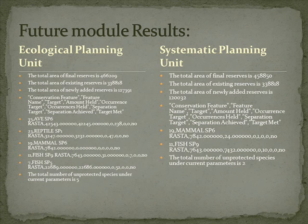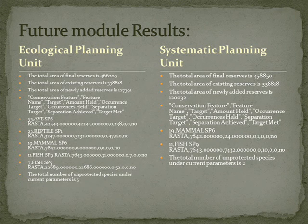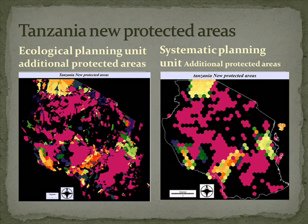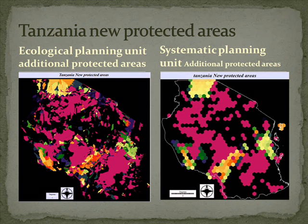The systematic conservation plan does not reach the target for the same two species from the current reserve. Areas of the new reserve are shown in various colors for both planning units. Areas to be conserved include Lake Victoria in the north and the Rungwe Province in the southwest.